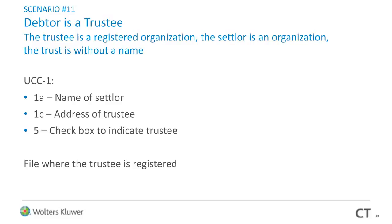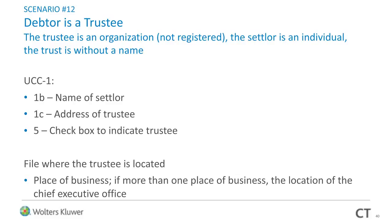Trust scenario eleven: the debtor is a trustee, the trustee is a registered organization, the settlor is an organization, and the trust is without a name — another example of a nameless trust. On box 1A, name of settlor. On 1C, address of trustee. Check the box. Trust scenario twelve: the debtor is a trustee, the trustee is an organization that is not registered, the settlor is an individual, and the trust is without a name. On box 1B, name of settlor. On 1C, address of trustee. Check box 5. Use the principal place of business or chief executive office address.